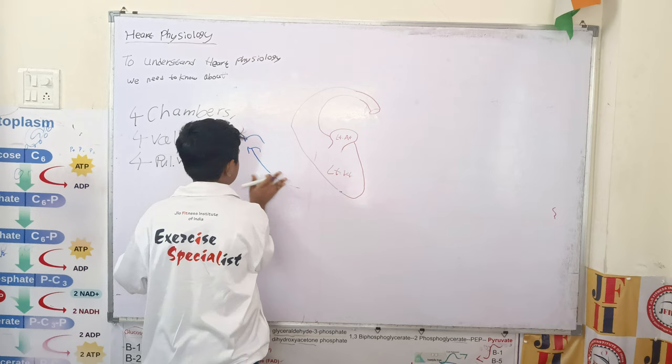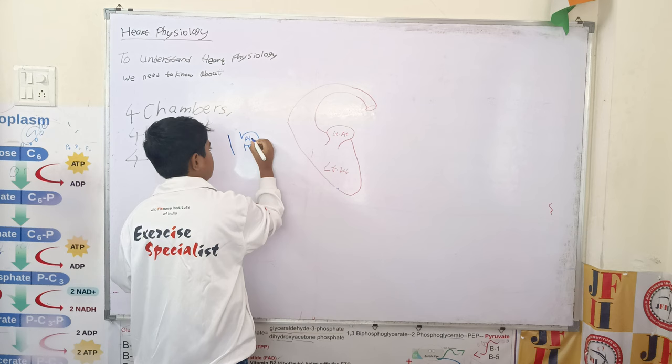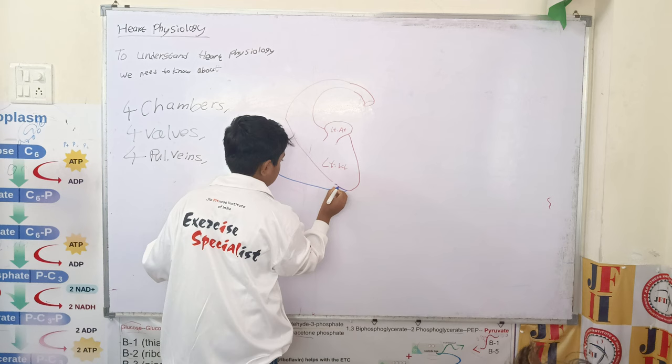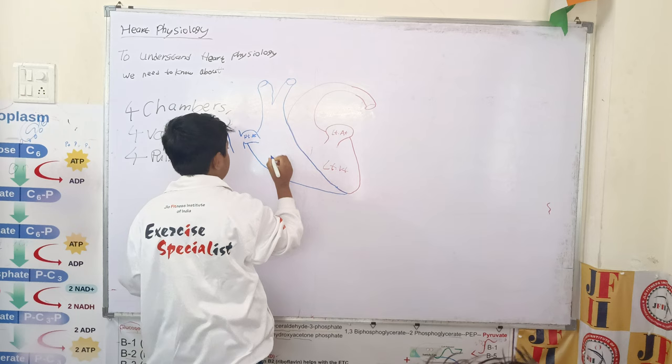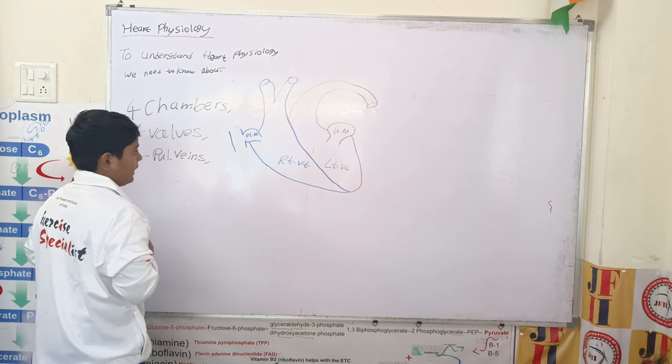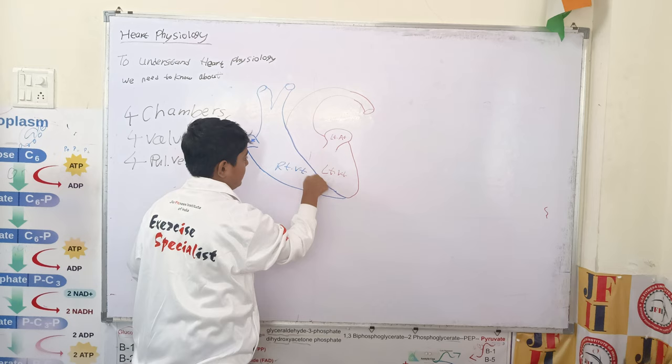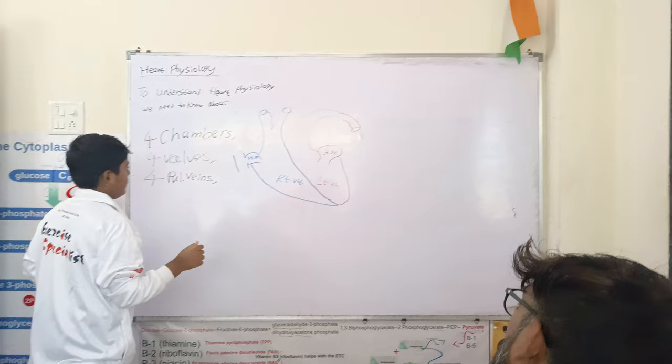The third is the right atrium, and the fourth is the right ventricle. Now we have understood the four chambers of the heart. I will repeat: the left atrium, the left ventricle, the right atrium, and the right ventricle. Now we have to learn about the four valves of the heart.